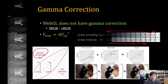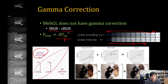The gamma correction equation looks like this: the input value is raised to the power of gamma and then scaled with a constant value. If it is not gamma corrected, we call it linear color. If it is gamma corrected, we call it sRGB color — linear RGB versus sRGB.